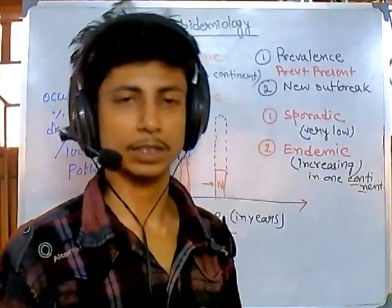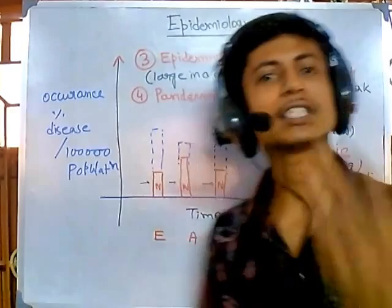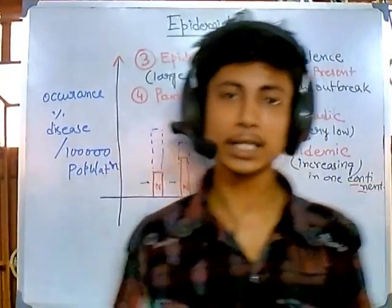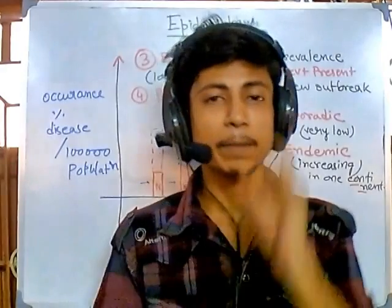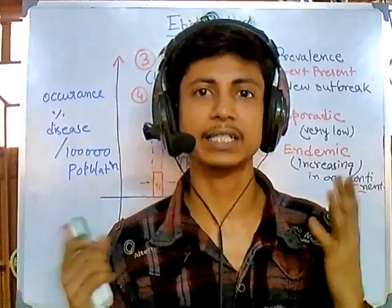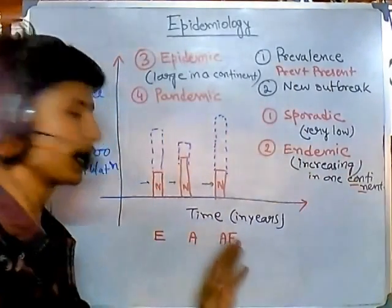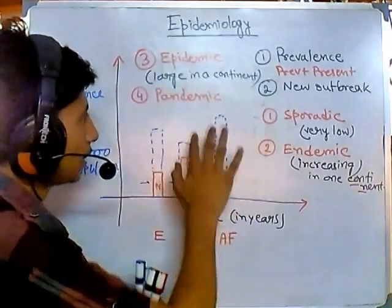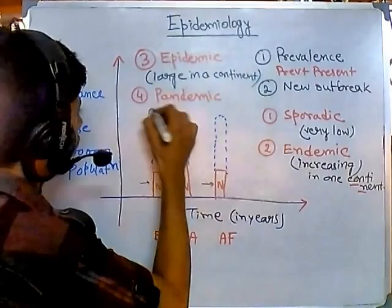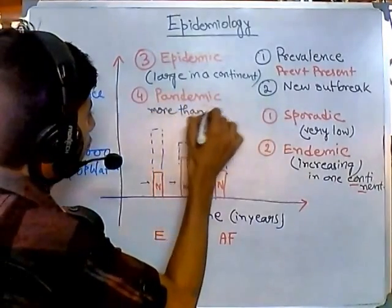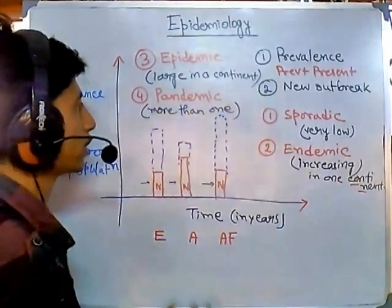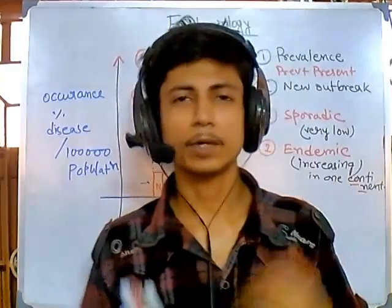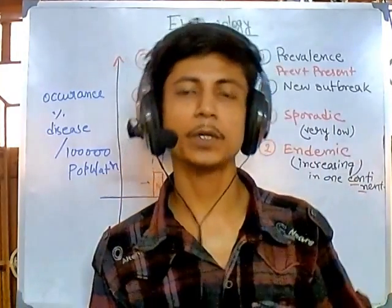The last and most important term is pandemic — the most devastating and dangerous part of epidemiology. A pandemic means the disease is occurring and new outbreaks are taking many lives across different continents simultaneously. While an epidemic is large but stabilized within one continent, a pandemic is spreading so much that it affects several continents at the same time — Africa, Europe, Asia — every continent gets affected. Occurring in more than one continent is called a pandemic.